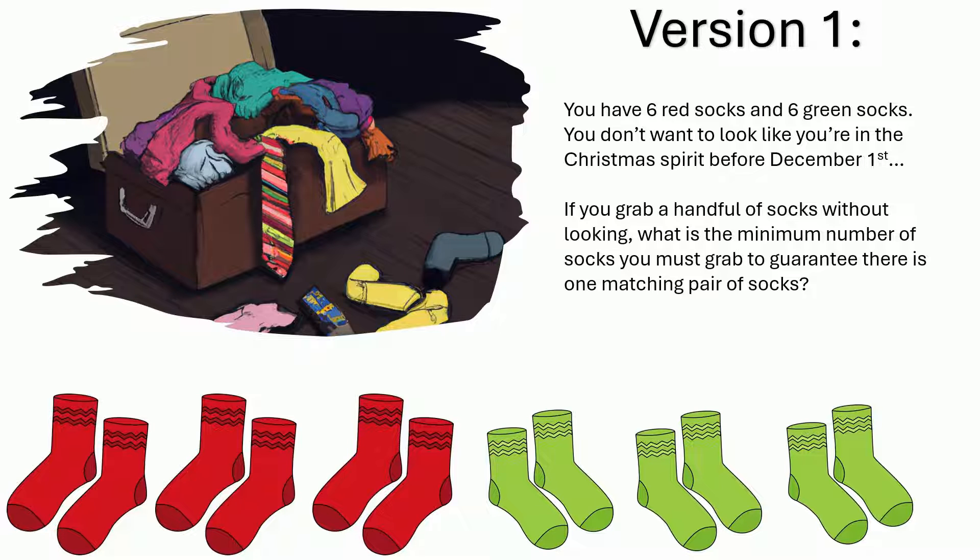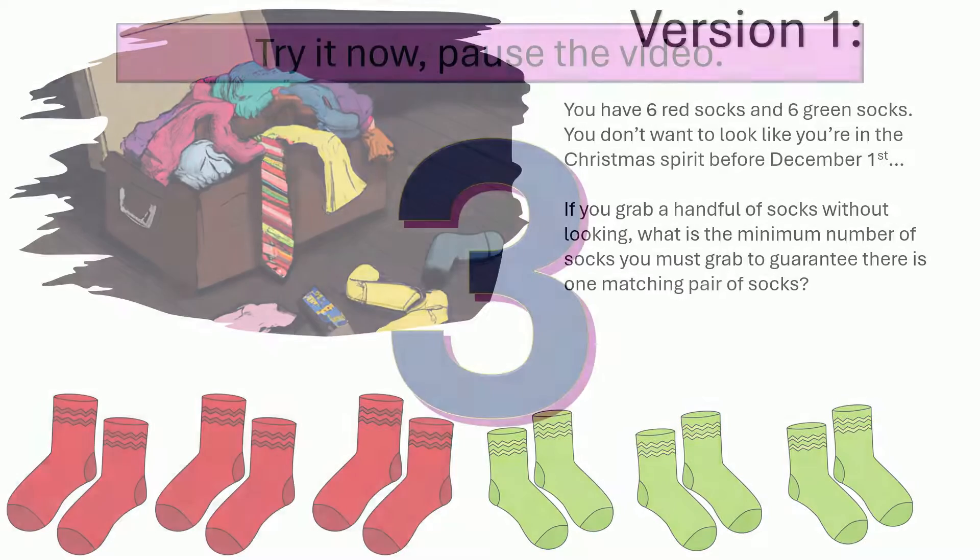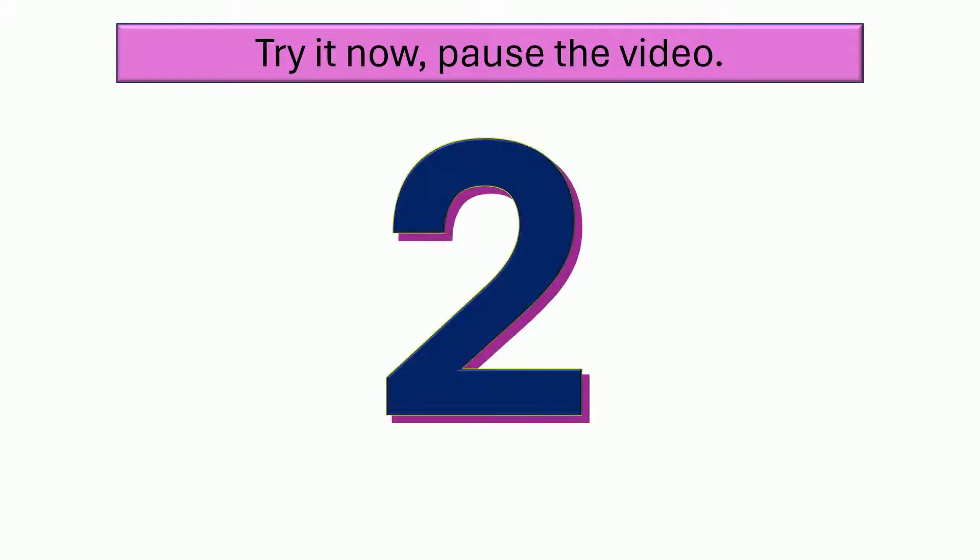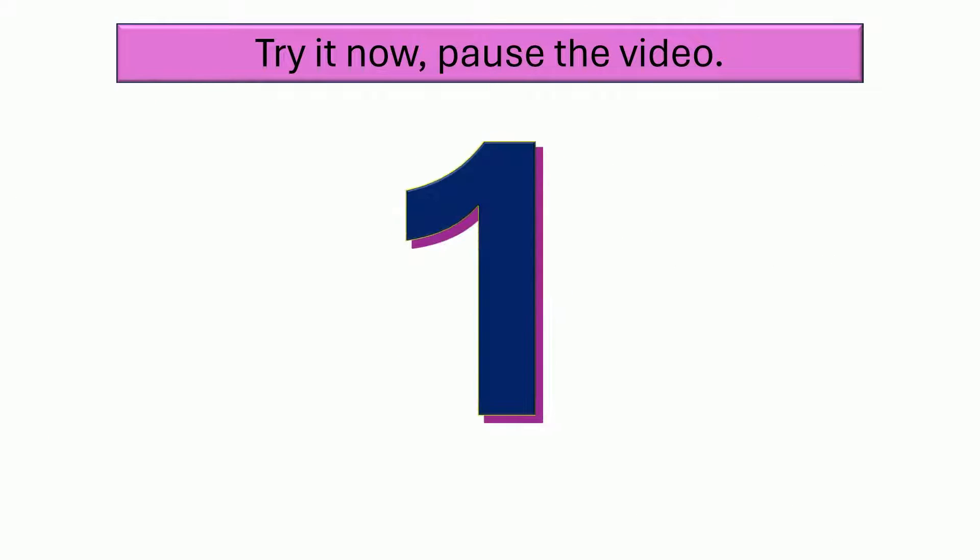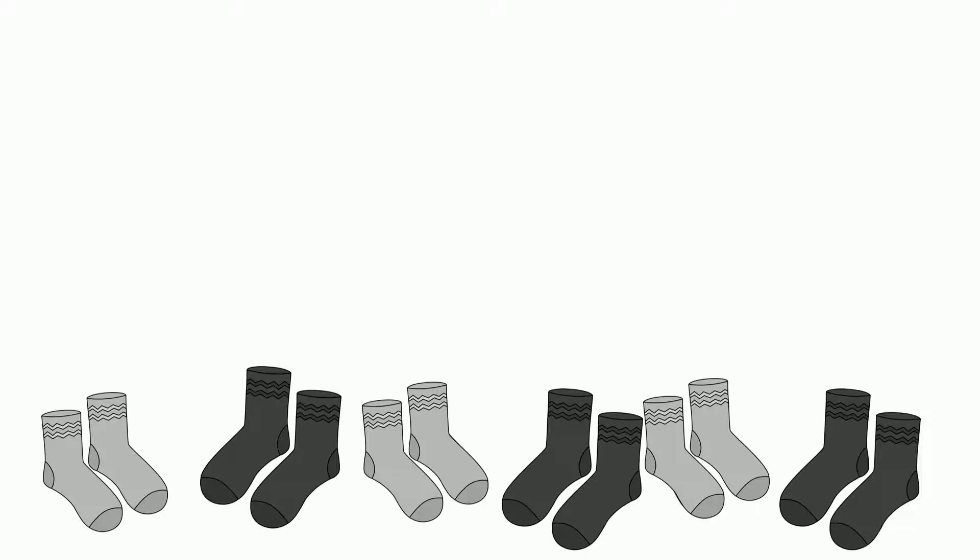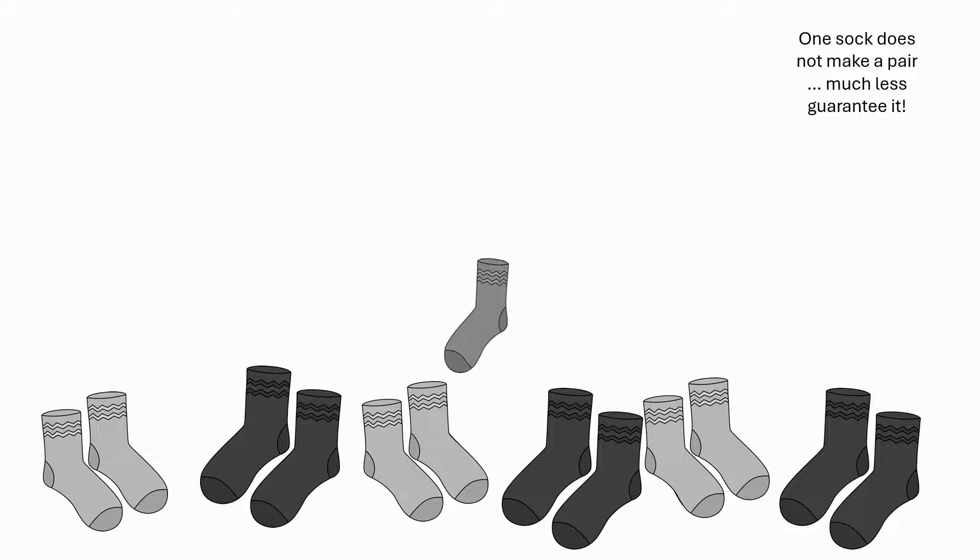So let's get into it, shall we? So version one, we've got the six socks that are red, six that are green. We're going to grab a handful. What's the minimum amount that we have to get in order to make sure, right, get a matching pair. So go ahead and pause it right now. Put your answer in the comments and I'm going to start getting into it. So first thing first, one sock, of course, does not make a matched pair because it could be red or could be green, but it's only one. It's not a pair.